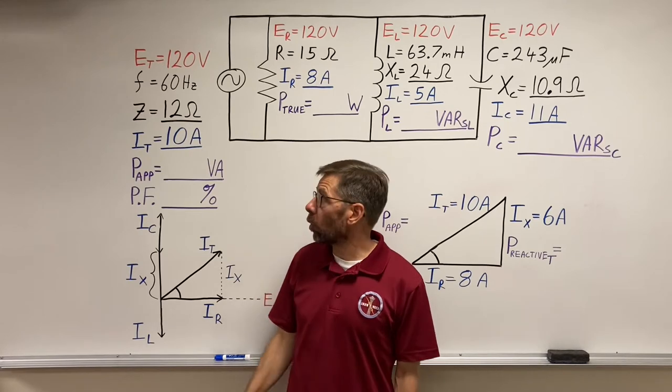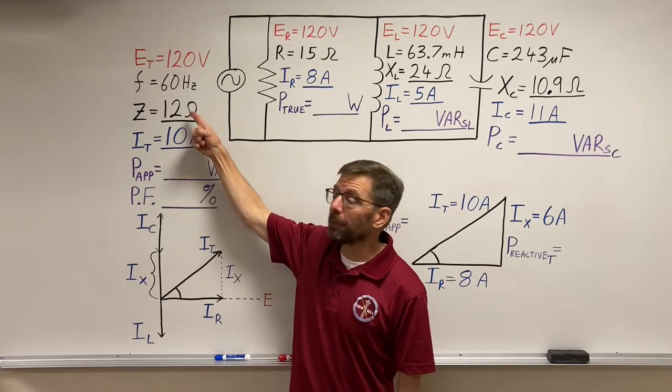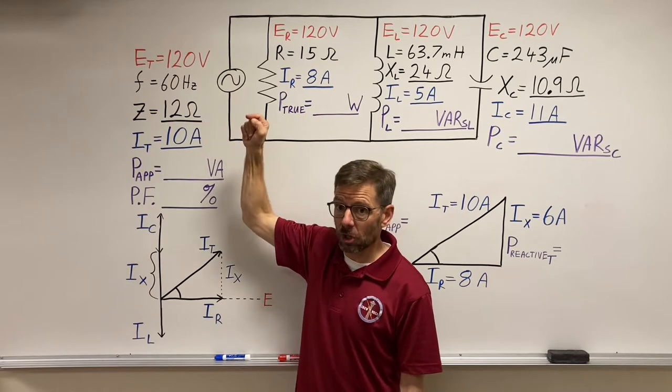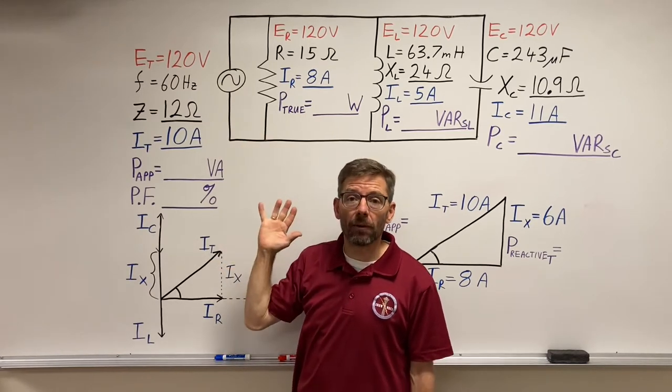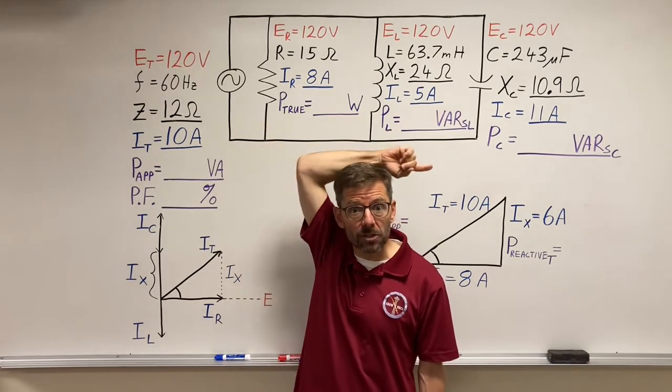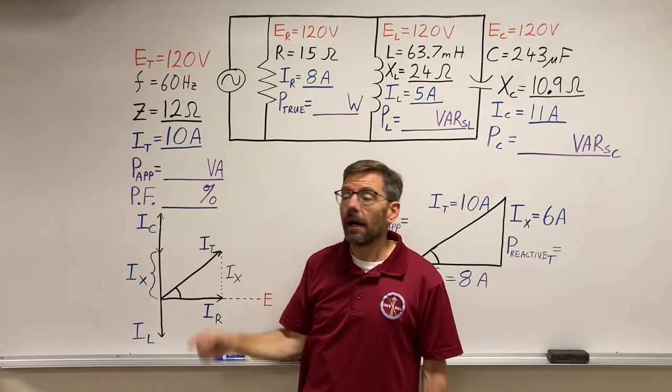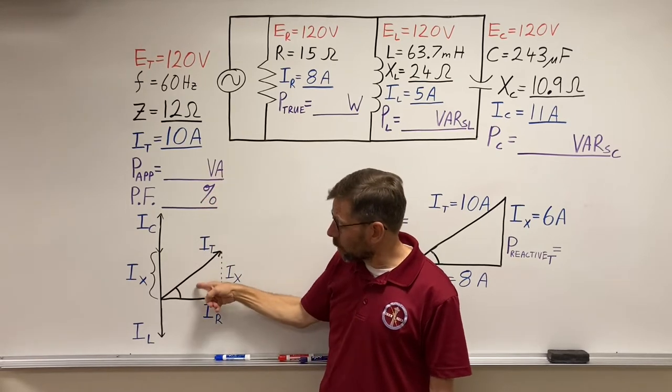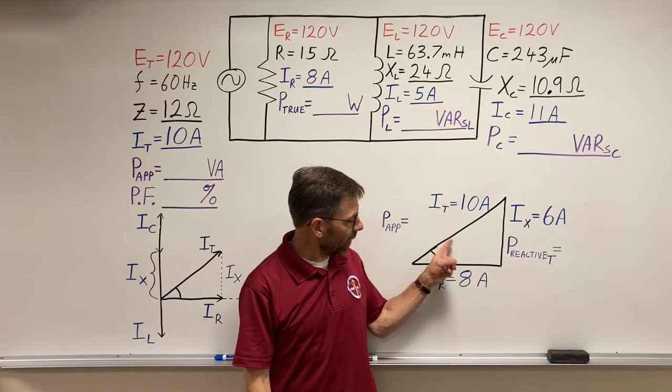Now that we've calculated our total current and found our impedance by voltage divided by amps, which gave us our ohms, now we're going to work on the power values. Basically using Ohm's law to derive the power values for each component, and then we'll come through and find out what is my power factor, and we'll go and check out angle theta.